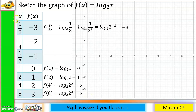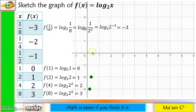Now let us plot. For x = 1/8, we divide 1 unit into 8 equal parts — the first division is 1/8 — and y = negative 3. For x = 1/4, divide into 4 equal parts, y = negative 2. For x = 1/2, divide into 2 equal parts, y = negative 1. Then the points (1, 0), (2, 1), (4, 2), and (8, 3).